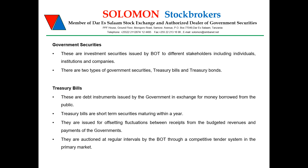Treasury bills are auctioned at regular intervals of two weeks. We have a 30-day treasury bill, a 91-day treasury bill, a 182-day treasury bill, and a 364-day treasury bill.